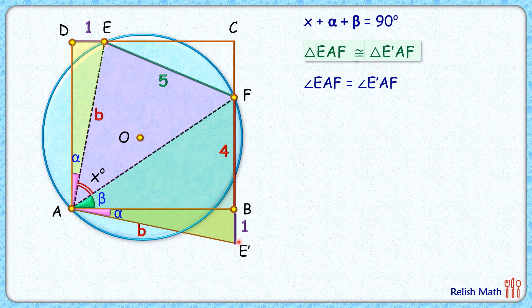As the triangles are congruent, by CPCT corresponding parts will be equal, so angle x or ∠EAF = ∠E'AF, or x = alpha + beta. But x + alpha + beta = 90°, so combining these equations, we get 2x = 90° or x = 45 degrees.